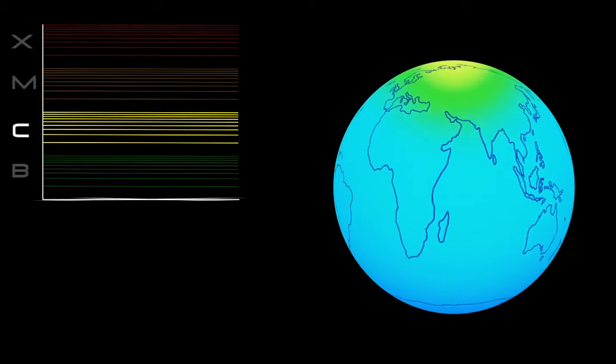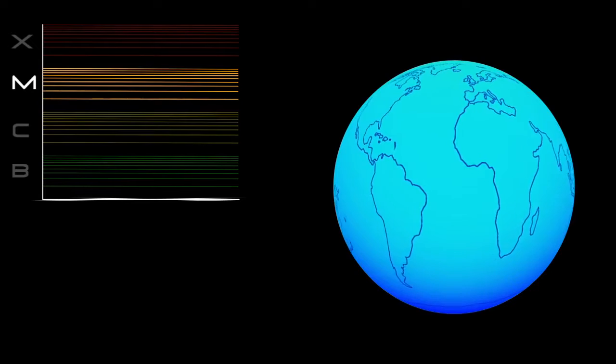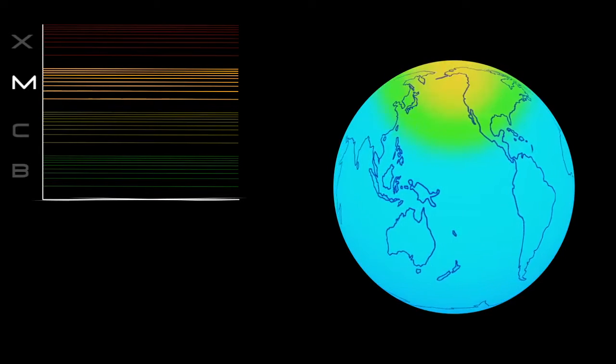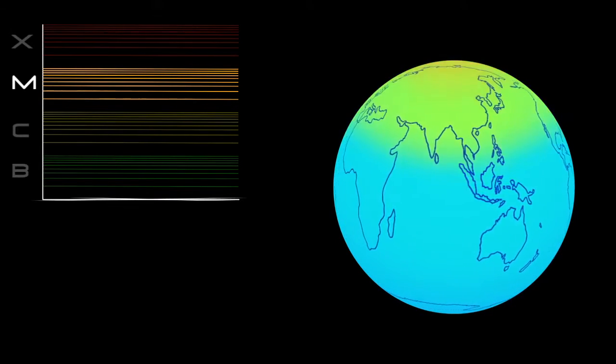C-class flares are too weak to noticeably affect Earth. M-class flares can cause brief radio blackouts at the poles, and minor radiation storms that might endanger astronauts.